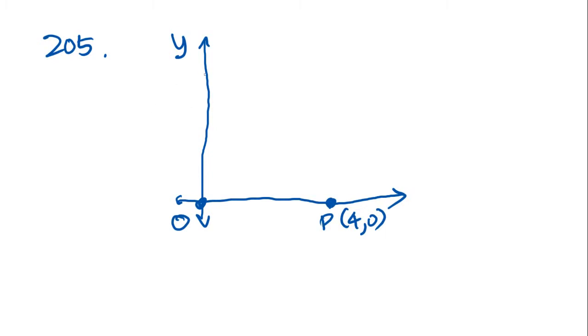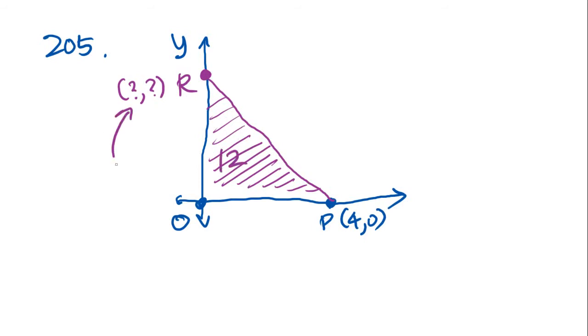They tell us that there is a point somewhere on this Y axis called R. We don't know where it is, but that it creates a triangle, and that the area of this triangle is 12. And we are trying to solve for this. Now we know that since it's on the Y axis, this is going to be 0, X, where X is this line.